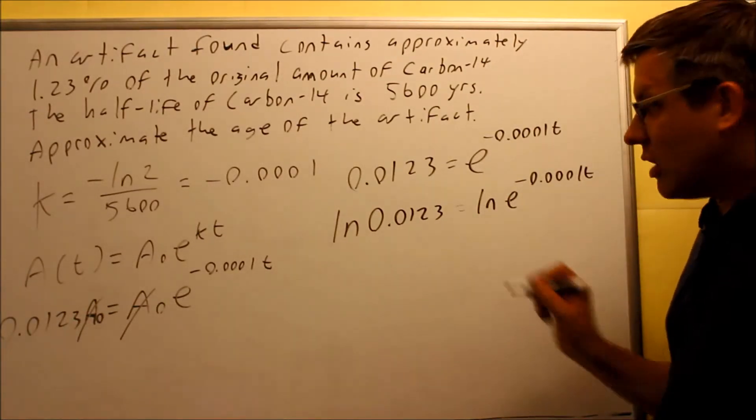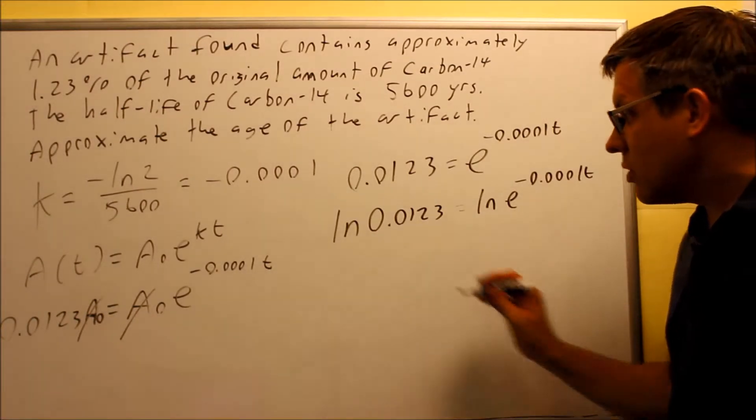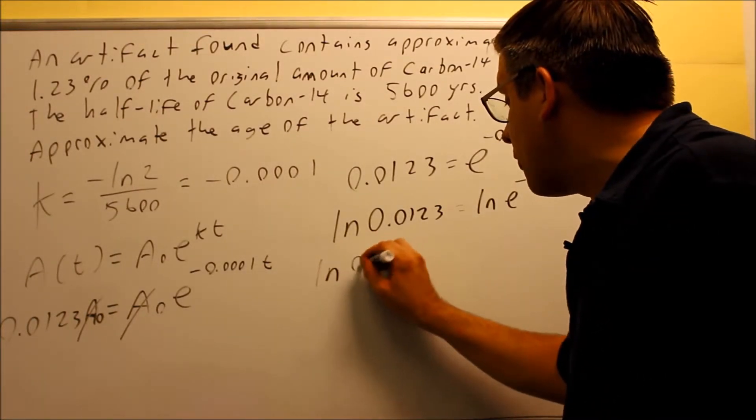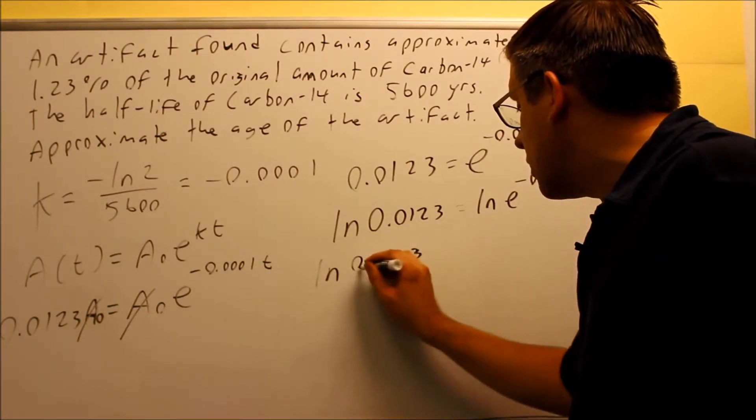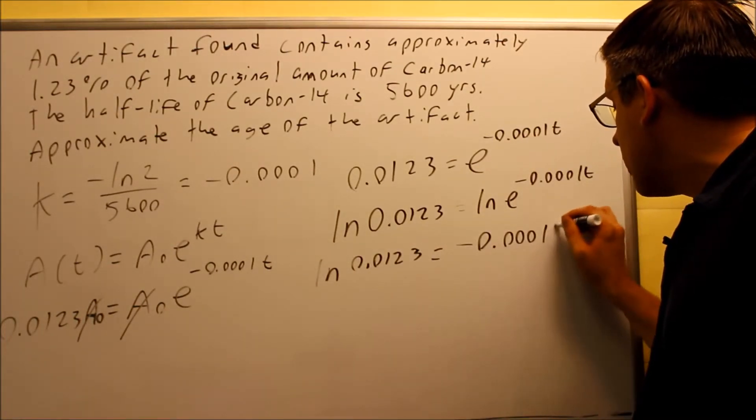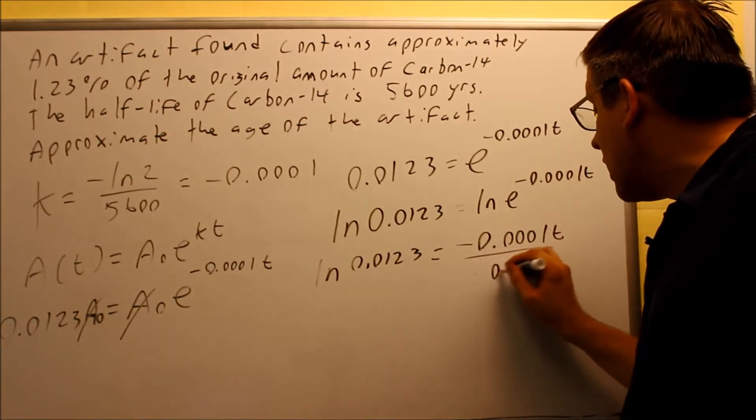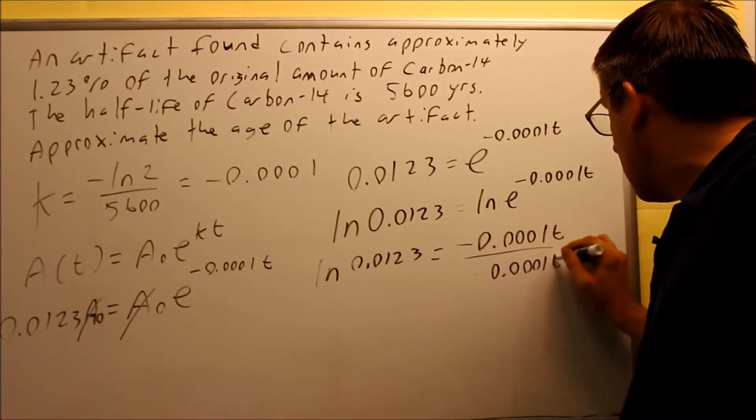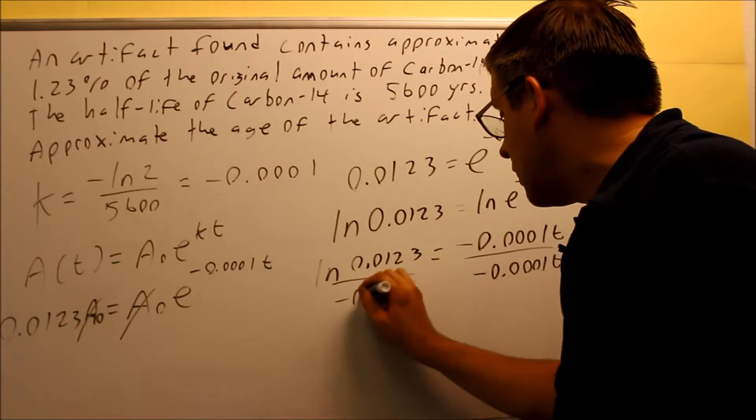And when I do that, the ln and e are going to cancel. That's why we want to put ln and e on both sides. You get natural log of 0.0123, and that's going to equal just the exponent part only, negative 0.0001t. And then you're going to divide both sides by the k value.